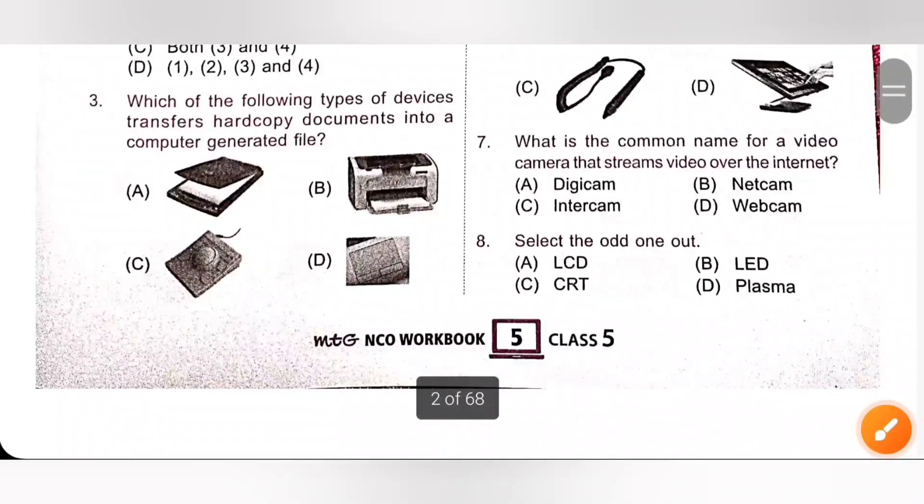Seventh one, what is the common name for a video camera that streams video over the internet? It is webcam. Webcam is a common name for a video camera that streams video over the internet. Option D.